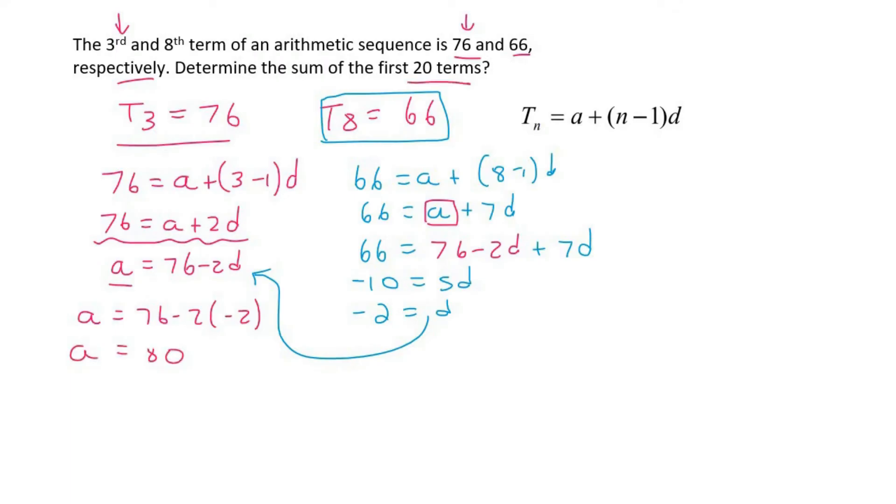Now they say, determine the sum of the first 20 terms. So N is 20, A is 80, N is 20, and the common difference is negative 2. That's going to give us 1020.